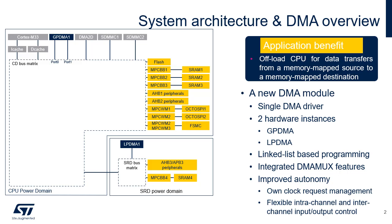GPDMA and LPDMA are two instances of the same IP and are therefore controlled by the same software driver. The DMA multiplexer connecting the requests generated by peripherals to the channels is integrated in the module. GPDMA and LPDMA support linked list-based programming to enable buffer chaining.